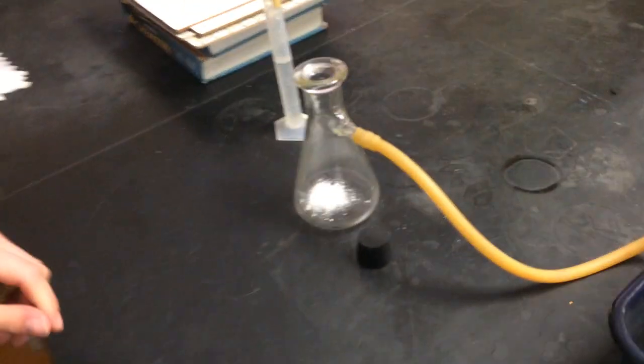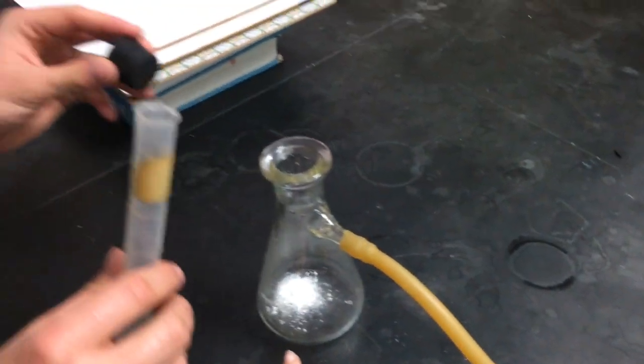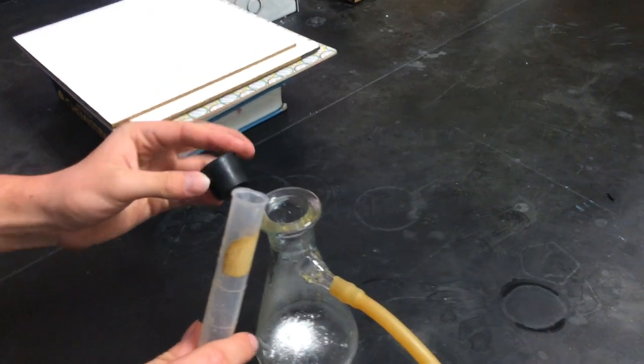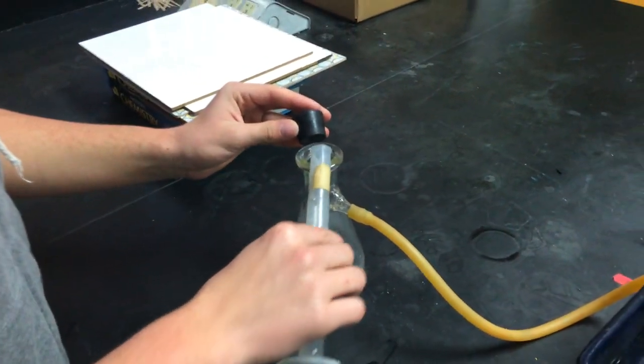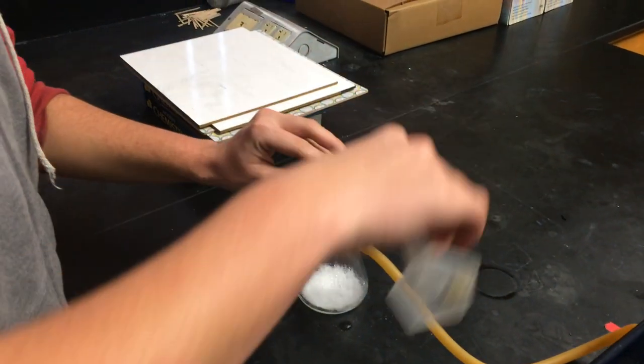We have our sidearm flask. It already has our calcium carbonate powder. We're going to quickly pour acid into the flask and then put the stopper on.